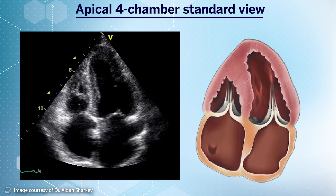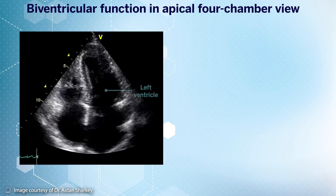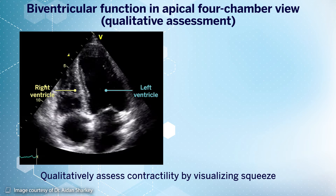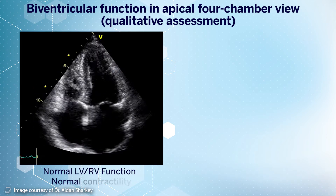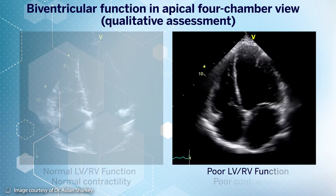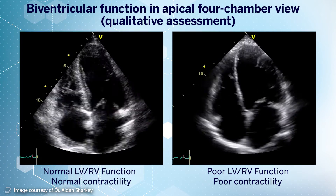This view has many basic and advanced uses. Assessment of biventricular function is one such basic use of the apical four-chamber view. The function of the left and right ventricles can be qualitatively assessed by eyeballing cardiac contractility. The video loop on the left shows normal left and right ventricular function, while the clip on the right demonstrates poor contractility of both ventricles, representing a patient with reduced biventricular function.